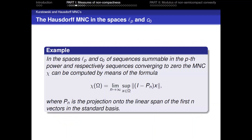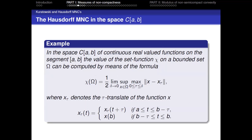There are several examples for the Hausdorff measure of non-compactness. For instance, in the spaces L^p and c₀, it can be computed using a specific formulation. Another example: for C[a,b], the Hausdorff measure of non-compactness χ(Ω) can be computed by a corresponding formulation.